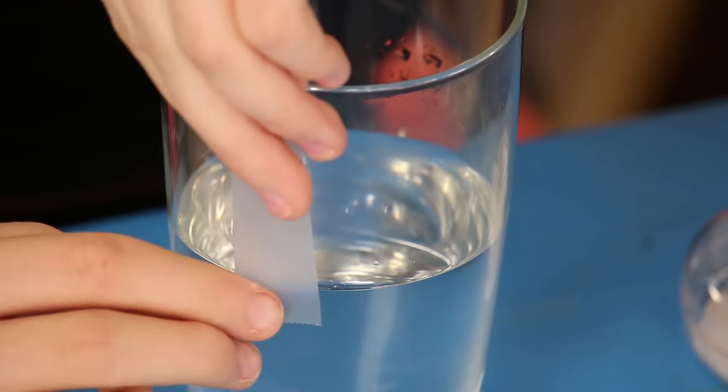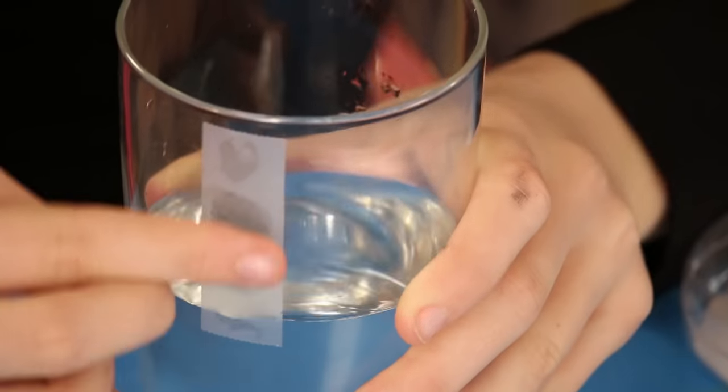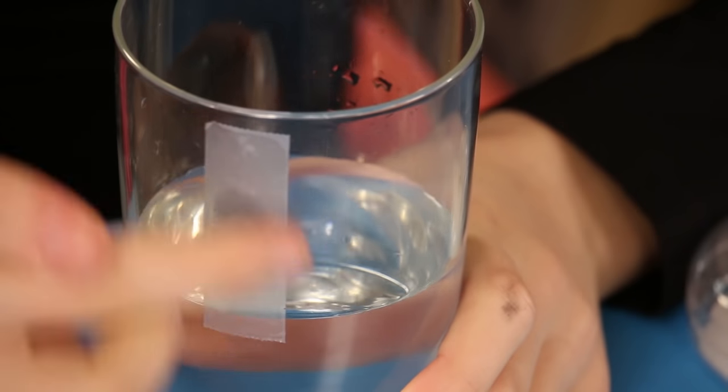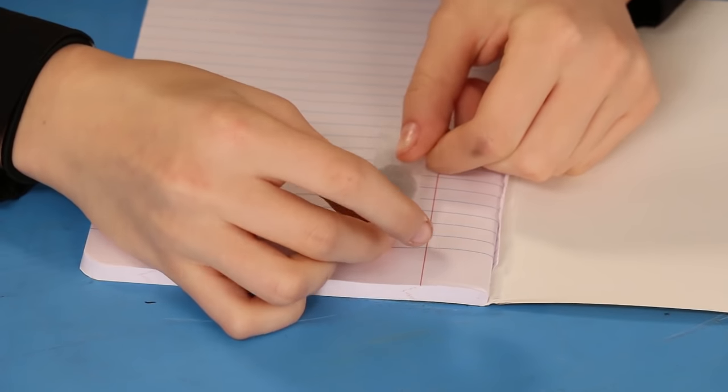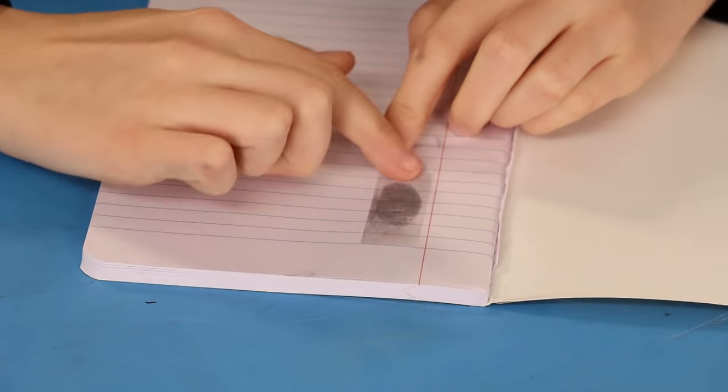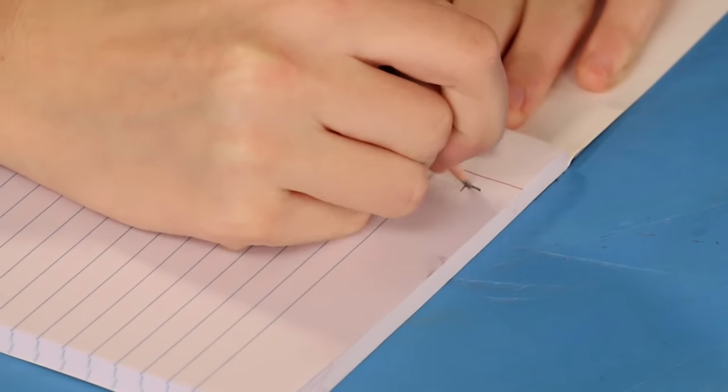Now take a piece of clear tape and press it over the print. Rub the tape and then remove it. Finally, tape the fingerprint into your notebook. Label where you found it.